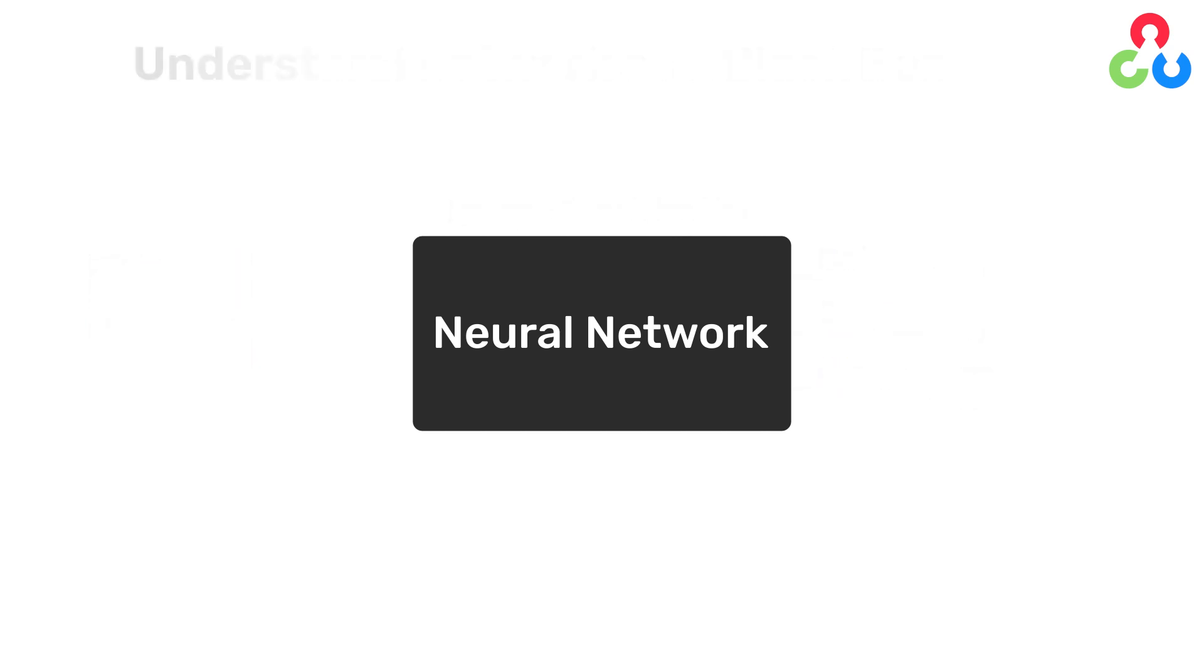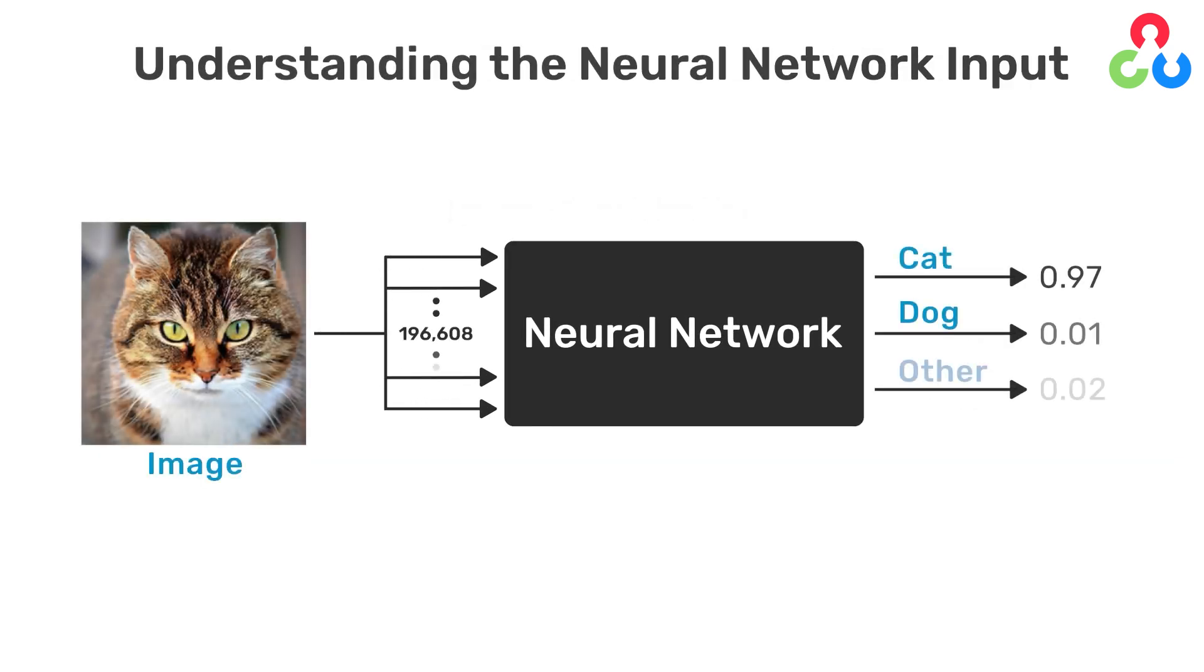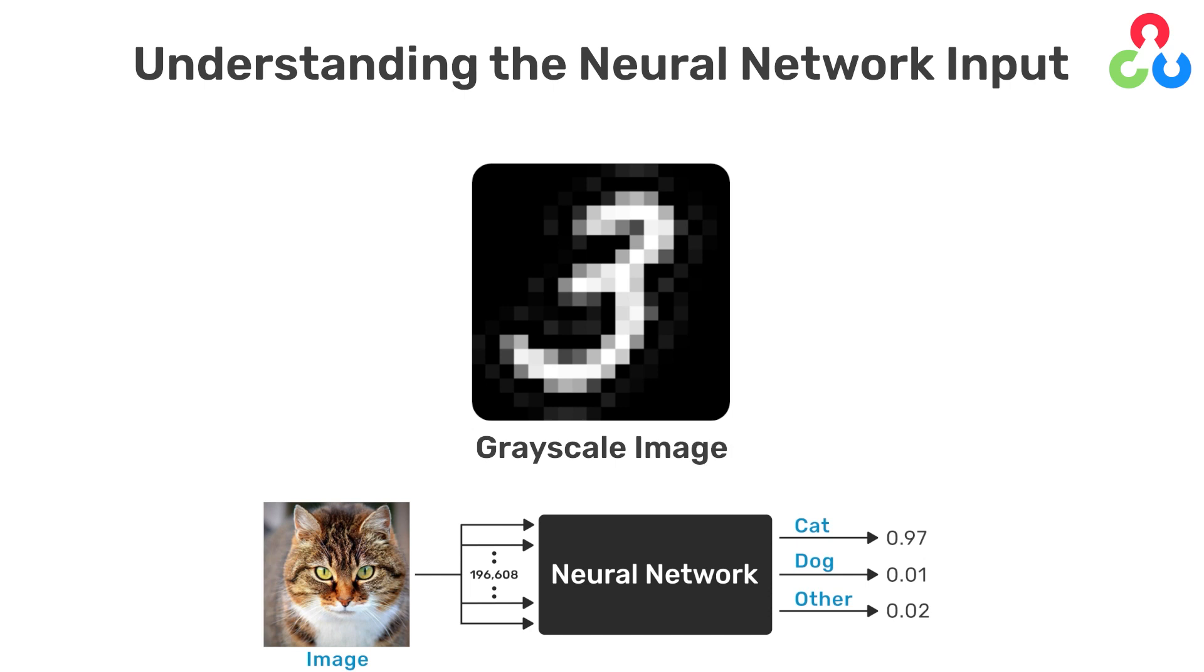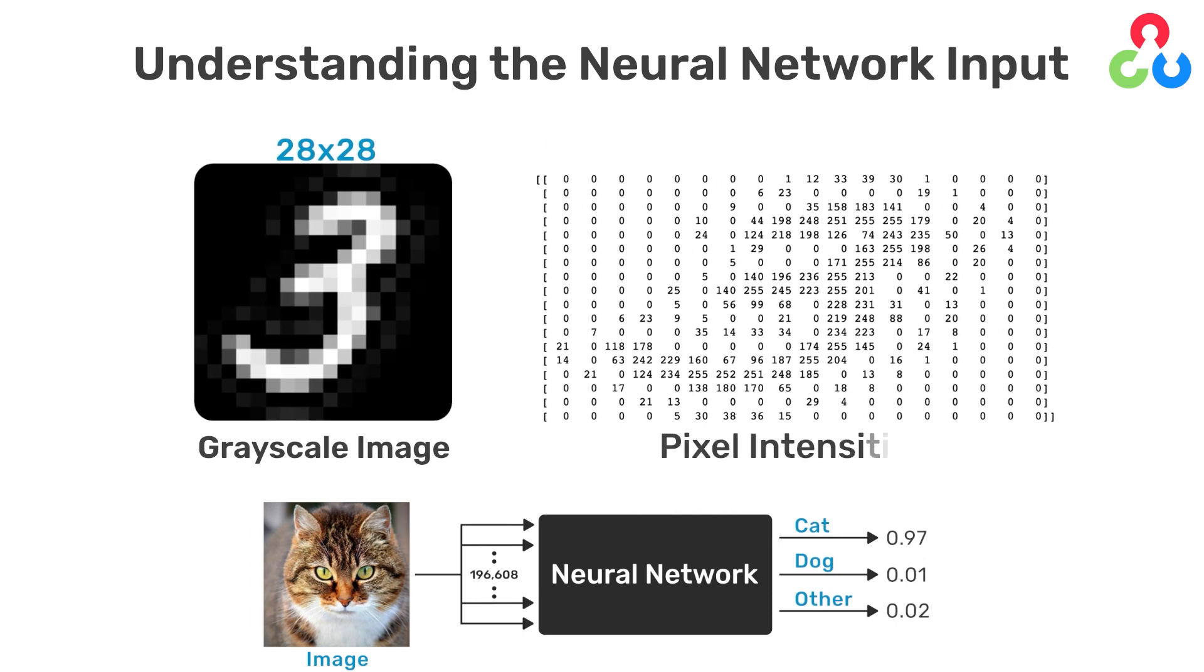Let's now take a look at the input to the neural network and consider how we might represent this information as numeric values. As you may already know, grayscale images are represented as an array of pixel values where each pixel value represents an intensity from pure black to pure white. In the example shown here, we have a 28 by 28 grayscale image of a handwritten digit. And to the right, we're showing the pixel intensities for each of the pixels in the image.